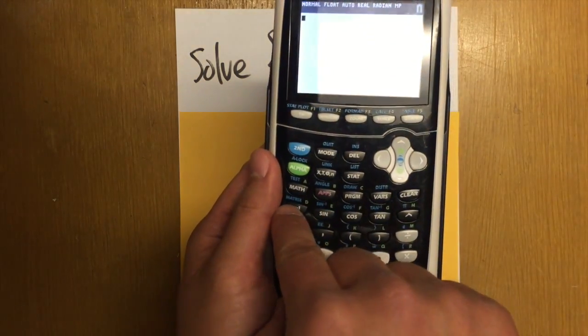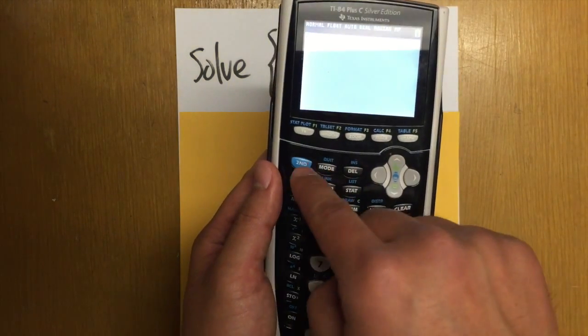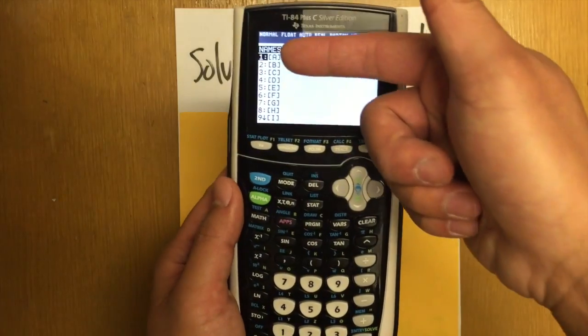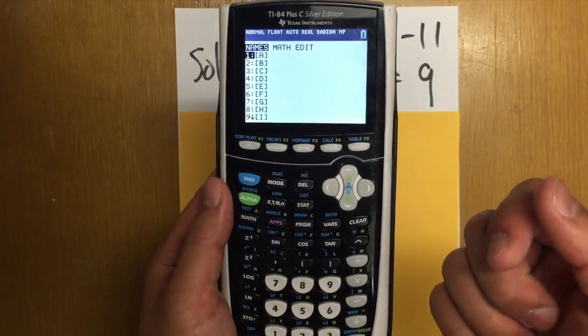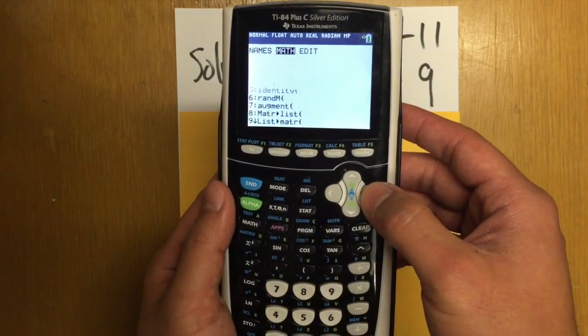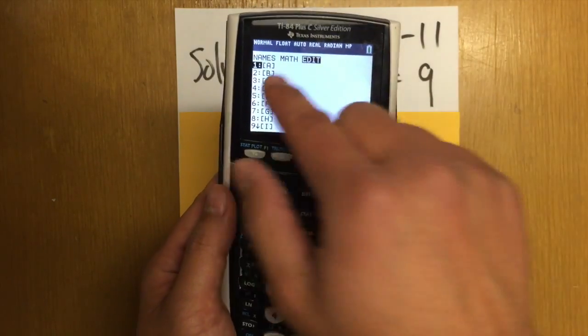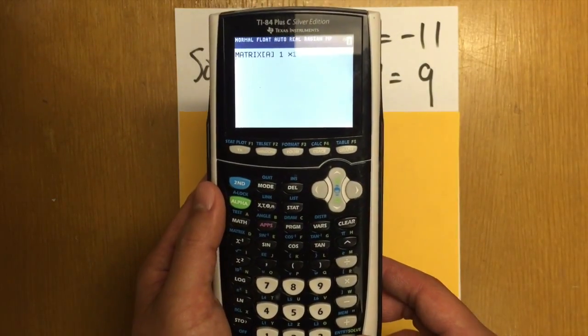To do so, you see that the matrix is right here in blue, right? We will first hit second and matrix. And you see, these are the names for the matrices. We will first go to edit. And then let's enter a matrix into matrix A. So we'll just hit enter right here.